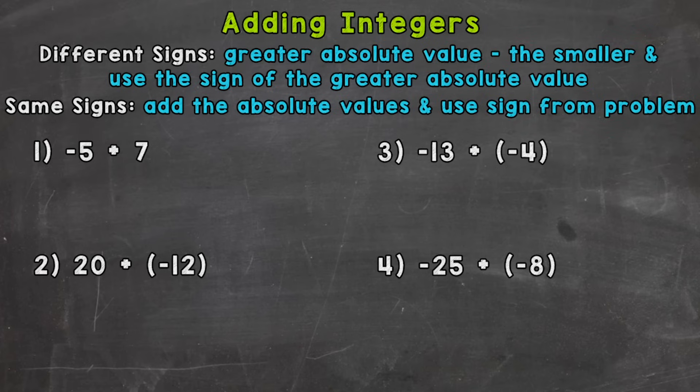So let's jump into number one, where we have negative five plus seven. The first thing we need to do is see if we have different signs or the same signs. In the case of number one, we have a negative five and a positive seven, so we have different signs.